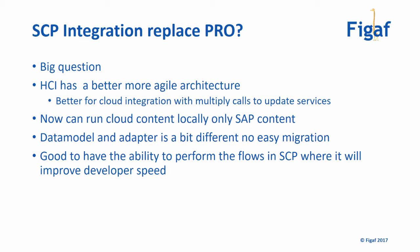People often ask if they can get rid of their Process Integration system and use HCI instead. At the moment, I don't think so, because they have two different data models. The amount of work we see with a PI dual-stack to single-stack migration would be even more going from PI to HCI. You can reuse the mapping, but dynamic properties are done differently and it could be a little challenging. It's a good platform to improve developer speed.